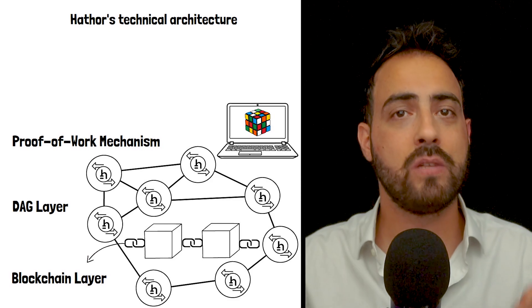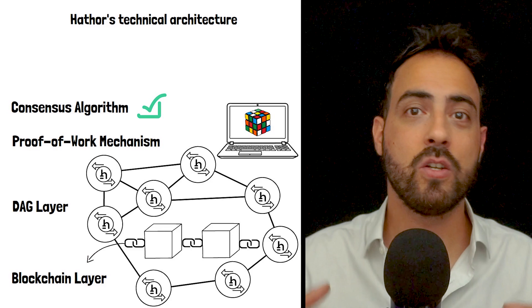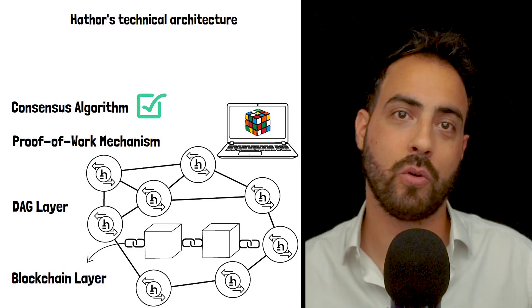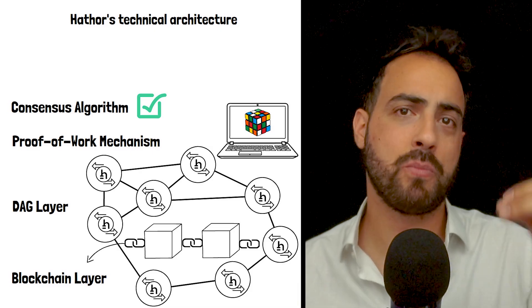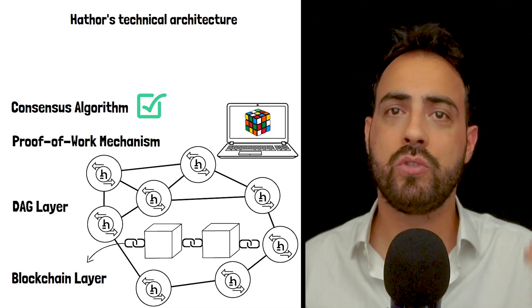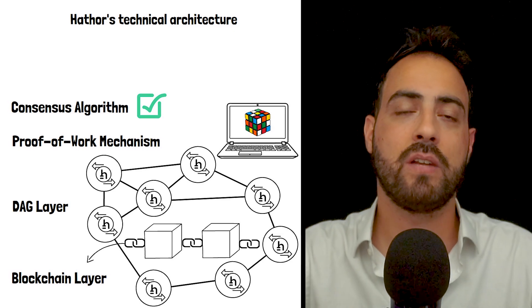Then, we have the consensus algorithm. The consensus algorithm in Hathor combines elements of proof-of-work, which is used in Bitcoin, with DAG-based consensus. In general, a consensus algorithm is responsible for ensuring that all nodes in the network agree on the current state of the system and which transactions are valid.